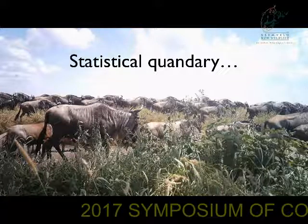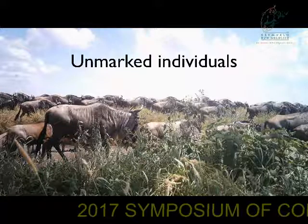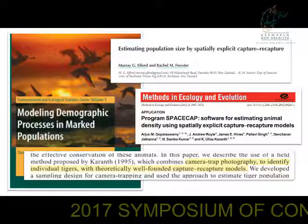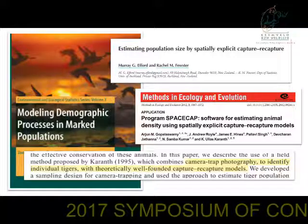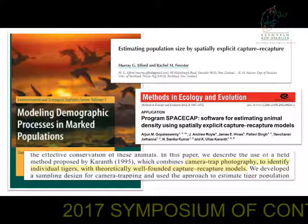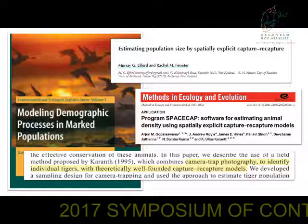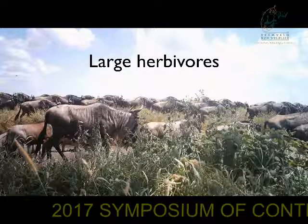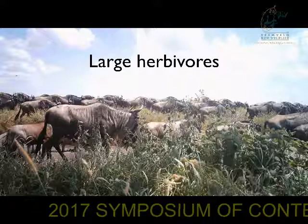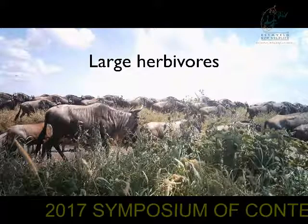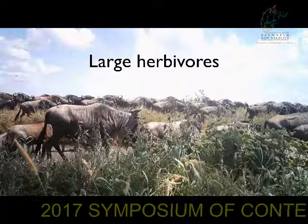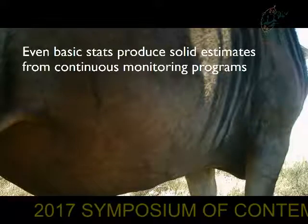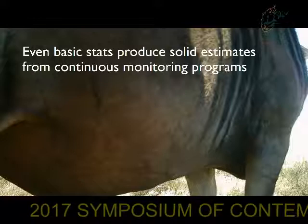For monitoring large herbivores, we face a very unique problem in that, unlike leopards or some of these other carnivores, these are unmarked individuals. There is a very well-developed field of analytics for animals that have spots, stripes, scars, or natural markings — if they can be individually identified, there are a number of different techniques to derive abundance estimates from these populations. Far less is available for unmarked individuals. And most estimation methods are for carnivores or for small, rare, cryptic species — they're not necessarily built to study animals like these large ungulates, which are relatively common and easy to detect in camera trap surveys.